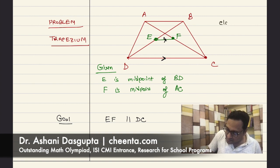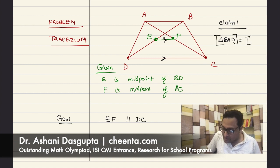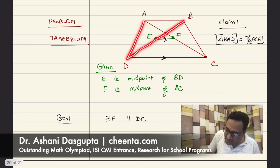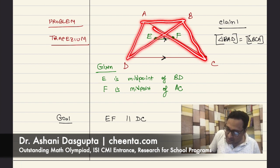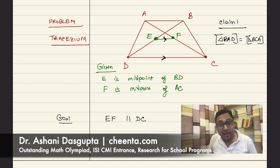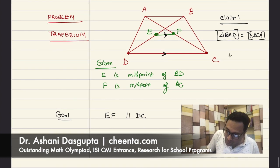First claim is, here is claim one. Triangle BAD has the same area as triangle BCA. Triangle BAD and triangle BCA, they have the same area. Can you tell me why?